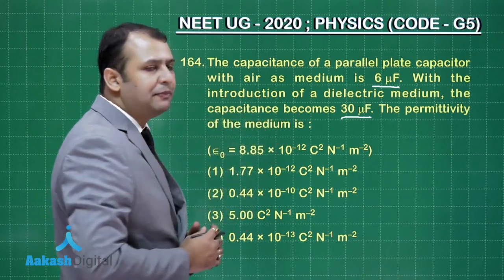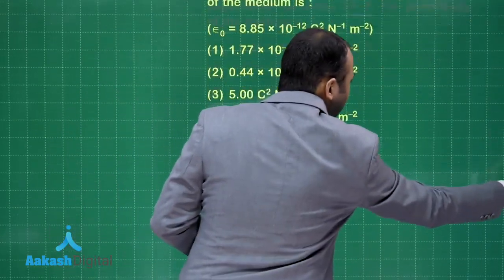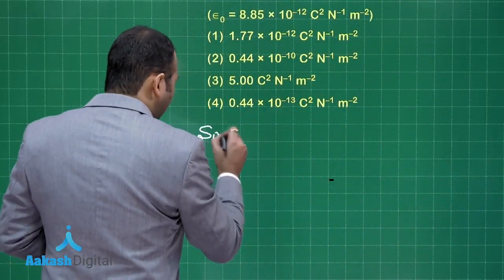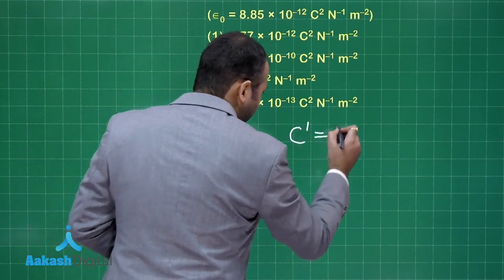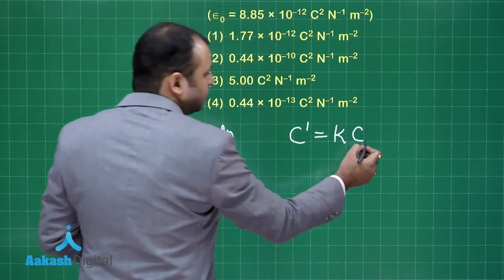We have to find the permittivity of this medium. So let's start with the solution. It is a simple formula based application where C dash equals KC. This is with air.